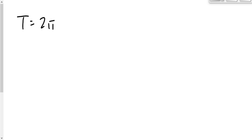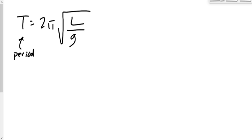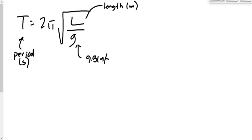Here is the equation for the period of a pendulum: T equals 2π times the square root of L over g. T is the period in seconds, L is the length of the pendulum in meters, and g is the gravitational field strength — 9.81 m/s². The 2π comes from the sinusoidal nature of the pendulum function. If you're on the moon or on top of Mount Everest, that 9.81 will be different.